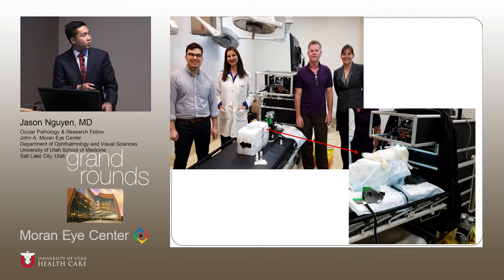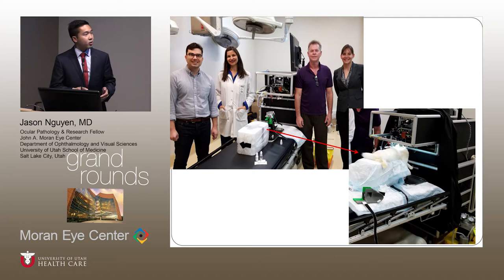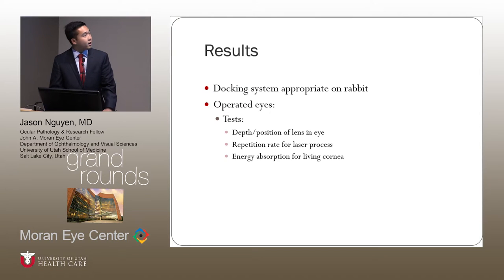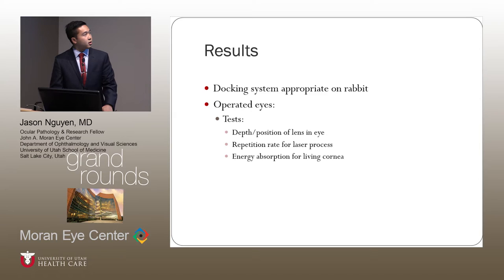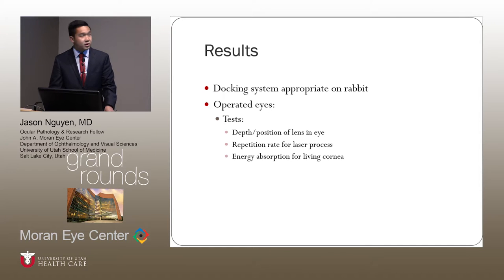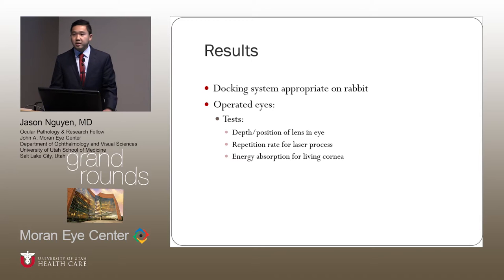With this picture I wanted to show the setup — essentially just positioning the rabbits. We were trying to test the docking of the laser system to the actual rabbit eye. What we found was that the docking system was very appropriate on the rabbit; it took quite a while but we did eventually figure it out. The company was able to determine some of the parameters they needed for future tests — the depth position of the lens in the eye, the repetition rate for the laser, and how much energy absorption was taken out by the cornea. From here, we plan on experimenting with more long-term biocompatibility of the treatment and seeing how well the treatment does in living tissue.